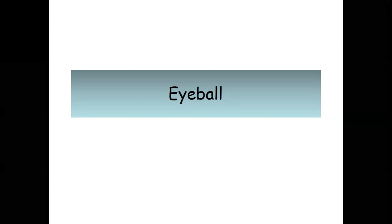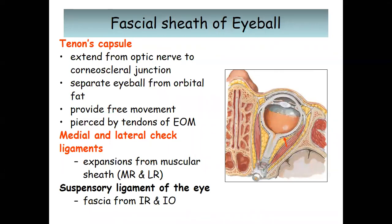I'm going to discuss on the eyeball first. Before we go further on discussing the eyeball or the eye, we have to know the covering part of the eye, the fascial sheath of the eyeball. The fascial sheath of the eyeball is known as the Tenon's capsule. The Tenon's capsule extends from the optic nerve toward the corneoscleral junction.